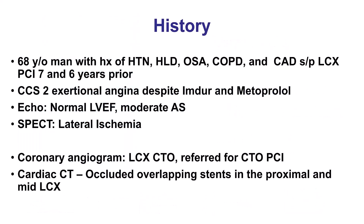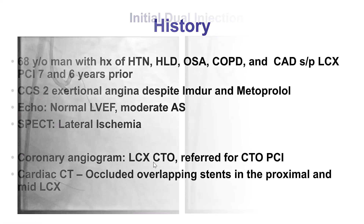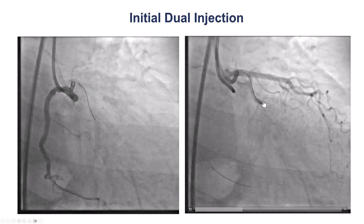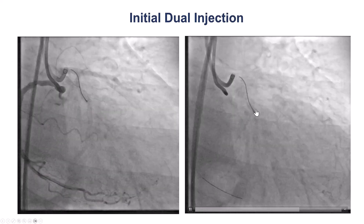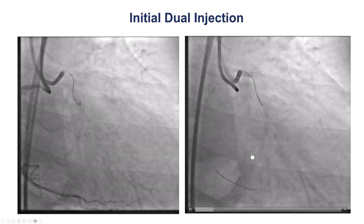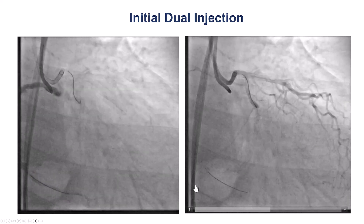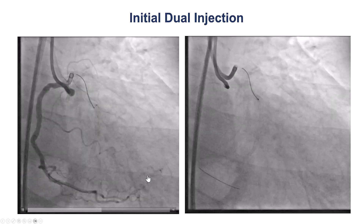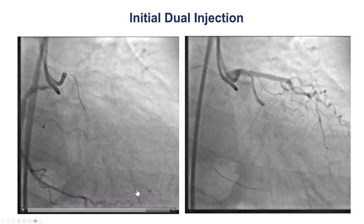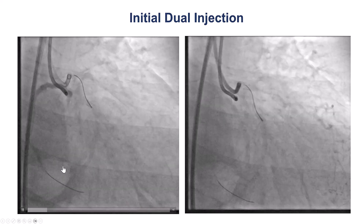The patient was a gentleman with multiple comorbidities and previously placed stents in the circumflex 7 and 6 years prior. He presented with angina, was found to have lateral ischemia, and was found to have occlusion of the circumflex stents. The coronary angiogram shows a blunt proximal cap with occlusion of the previously placed stents, and only faint filling of the obtuse marginal branches, mainly through contralateral collaterals.